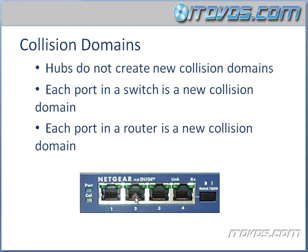A long time ago when we used to use hubs, we could use bridges to help with the collision problem. Bridges actually do break up collision domains, but bridges normally only have a couple of ports. So we had to take one hub, connect it to the bridge, then connect another hub to the bridge, giving us two collision domains — but that really didn't solve the problem, it just helped a little bit. And then along came switches. Switches really solved the problem because they have as many ports as hubs and cost as much or even less. Hubs are actually hard to find now — you almost can't even buy them because they're obsolete.